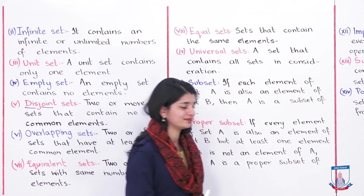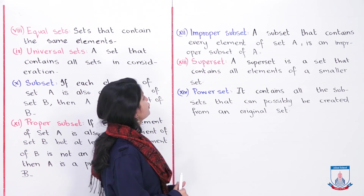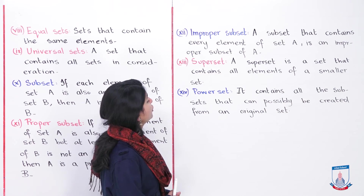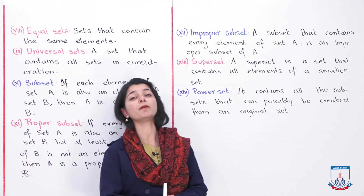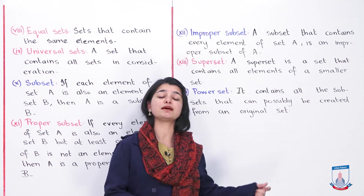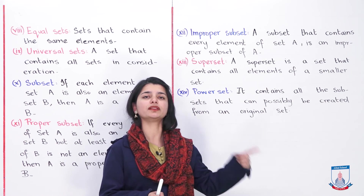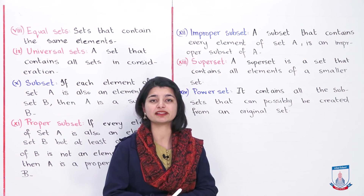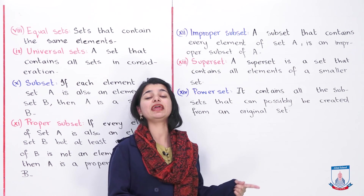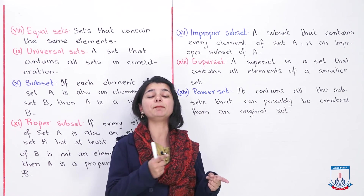Let's look at the next one — improper subset. A subset that contains every element of the original set B is called an improper subset. Why? Because there are all elements present that are in its original or parent set.